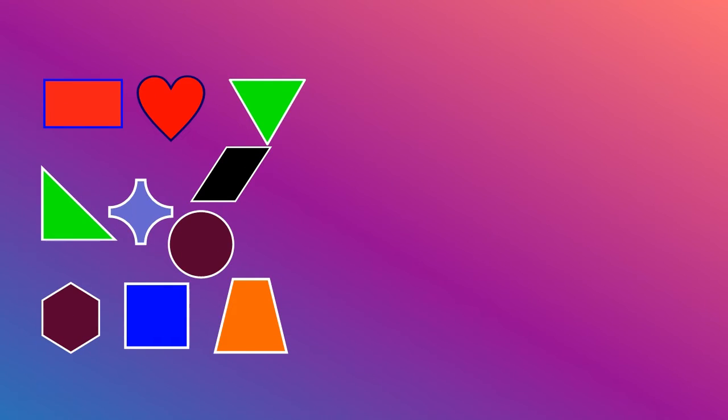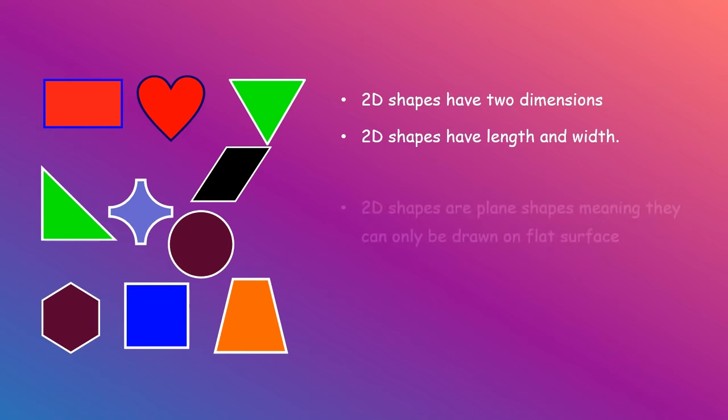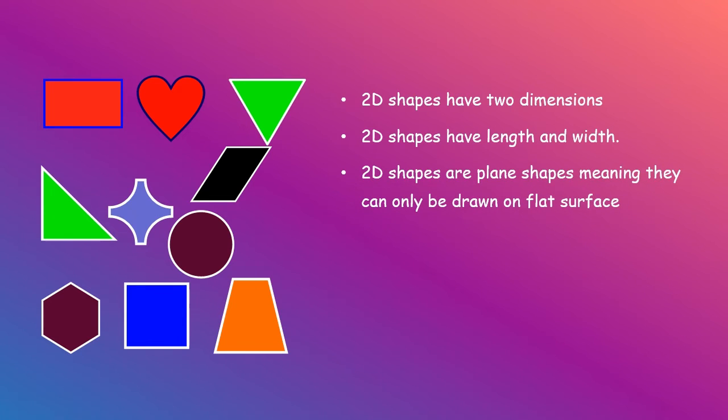So, we shall look at what 2D shapes are. First of all, the name 2D comes from the term two-dimensional. What it means is that 2D shapes have two dimensions. Dimension simply means the direction in which something is measured. In the case of 2D shapes, we can measure only the length and the width. Another feature about 2D shapes is that they are plane shapes.